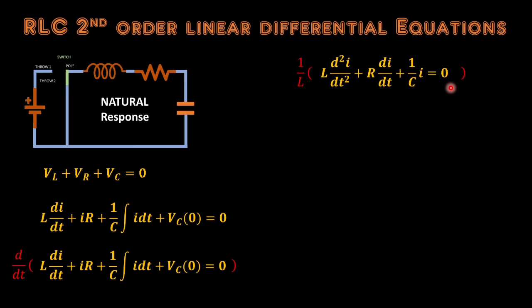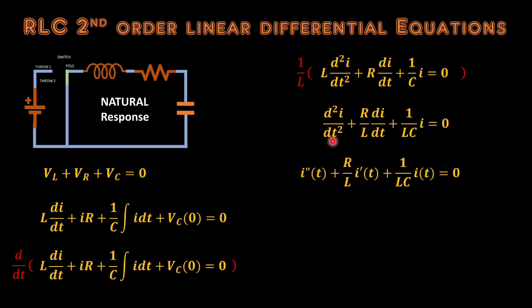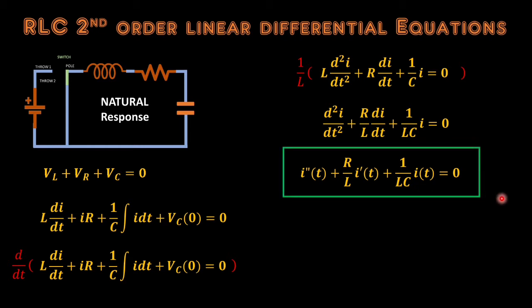To further simplify and get rid of the coefficient of the second-order derivative, we divide both sides by L. This puts our equation into standard form. We can also represent derivative terms using prime notation: i''(t) + (R/L)·i'(t) + (1/LC)·i(t) = 0. We have now derived the second-order linear differential equation of a series RLC circuit under the natural response, which is a homogeneous equation.